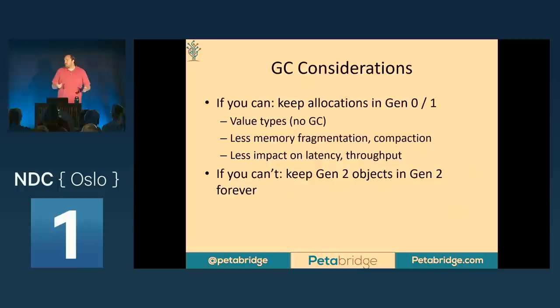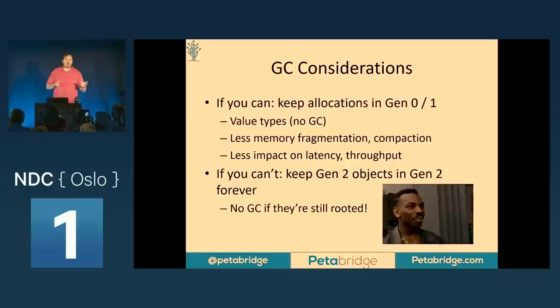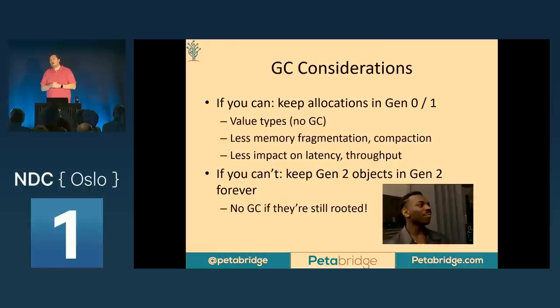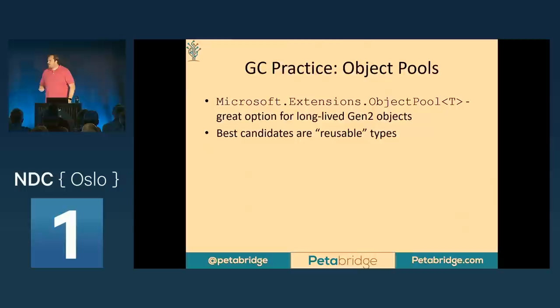If you have Gen 2 objects, the right approach for managing performance is to keep Gen 2 objects available in memory forever — no garbage collection for those objects will occur if they're still rooted. This is where concepts like memory pooling and object pooling enter the picture, where rather than having a bunch of new StringBuilders allocated continuously, maybe it's better to have a shared pool of a thousand of them that get rented periodically throughout the course of your application running. That can result in a lot less memory fragmentation and a lot less garbage collection over your application's lifetime.